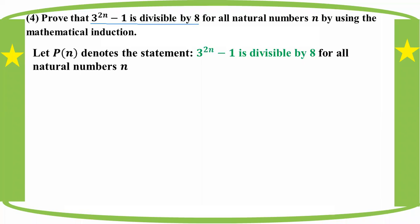For the base case, 2 to the power 2n minus 1, when n is equal to 1, equals 1.